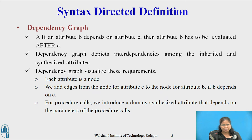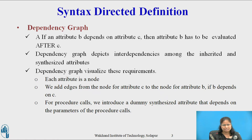Dependency Graph. If an attribute B at a node in a parse tree depends on attribute C, then the semantic rule for attribute B at that node must be evaluated after the semantic rule that defines C. The interdependencies among the inherited and synthesized attributes at nodes in the parse tree can be depicted by a directed graph called a Dependency Graph. Dependency Graph visualizes these requirements. Each attribute is a node. We add edges from the node for attribute C to the node for attribute B if B depends on C.